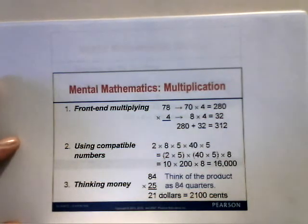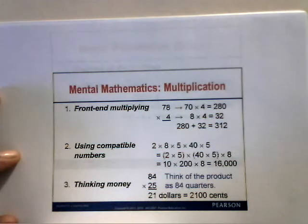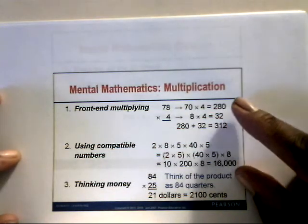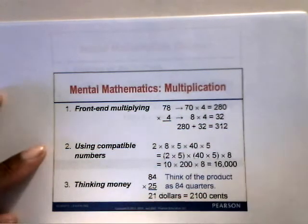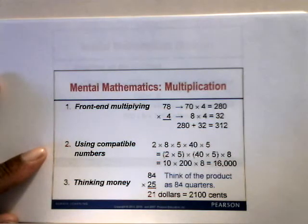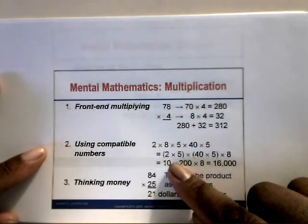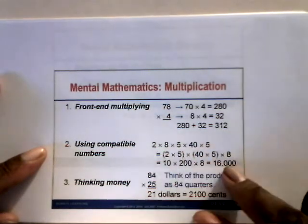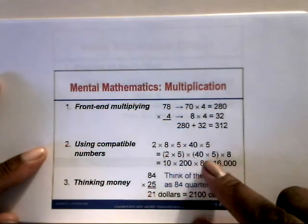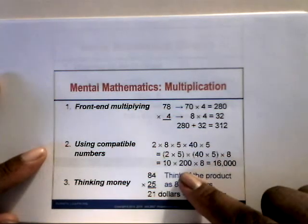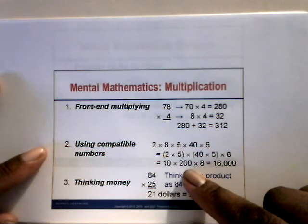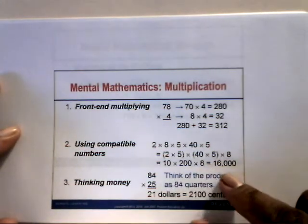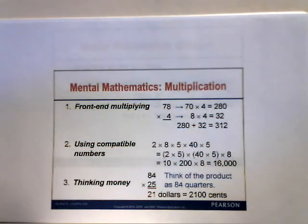For multiplication mental mathematics, one method is front-end multiplying. For 78 times 4, do 70 times 4 equals 280, then 8 times 4 equals 32; add them for 312. Another method uses compatible numbers: for 2 times 8 times 5 times 40 times 5, pair 2 times 5 equals 10 and 40 times 5 equals 200, then multiply 10 times 200 times 8 equals 16,000.